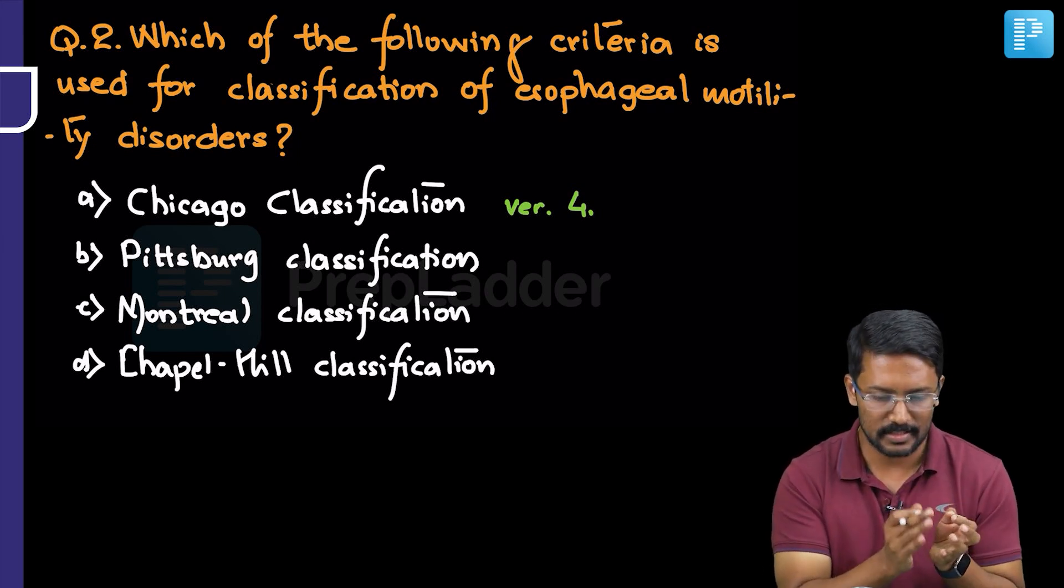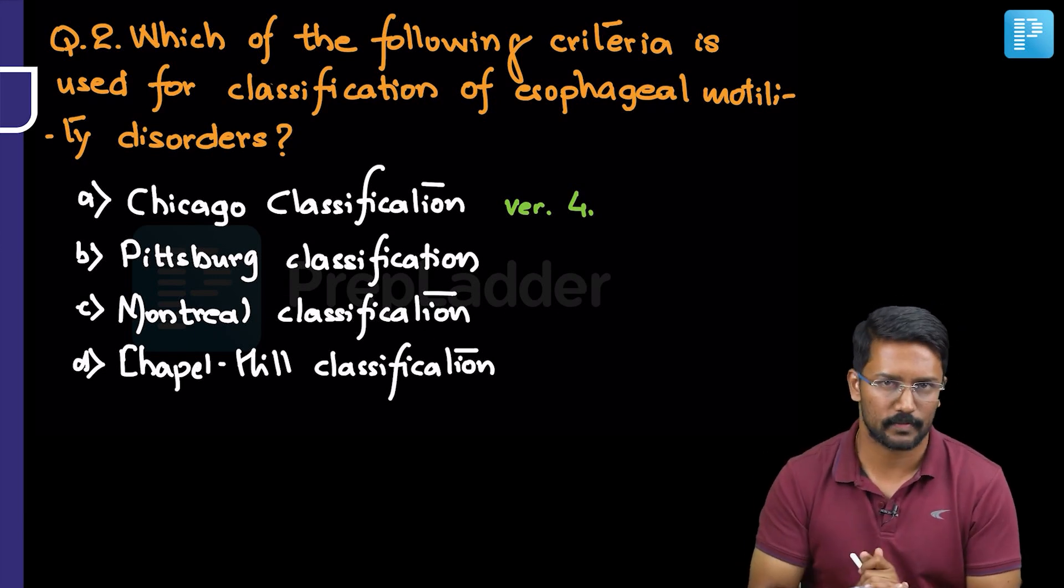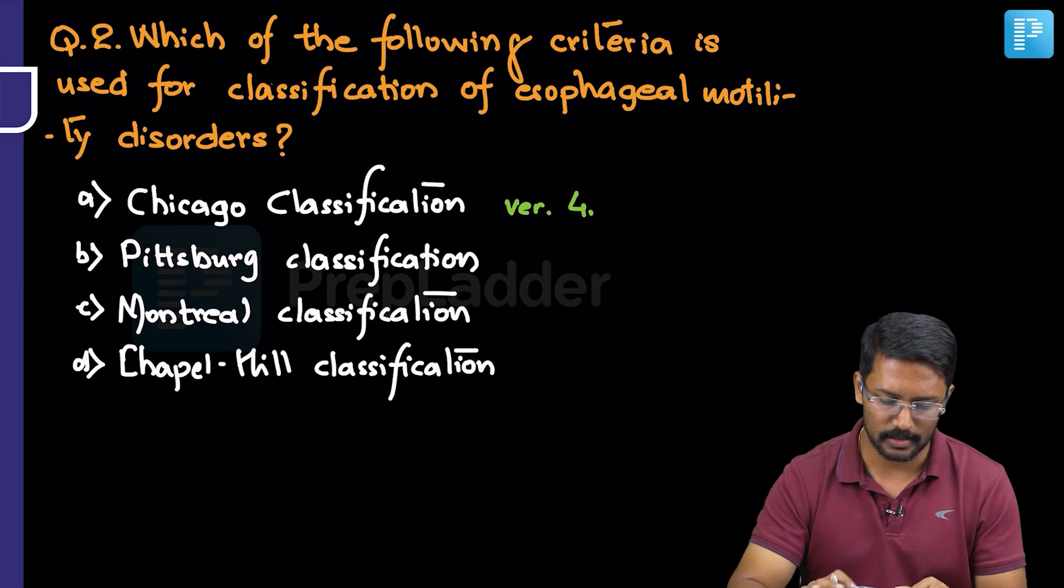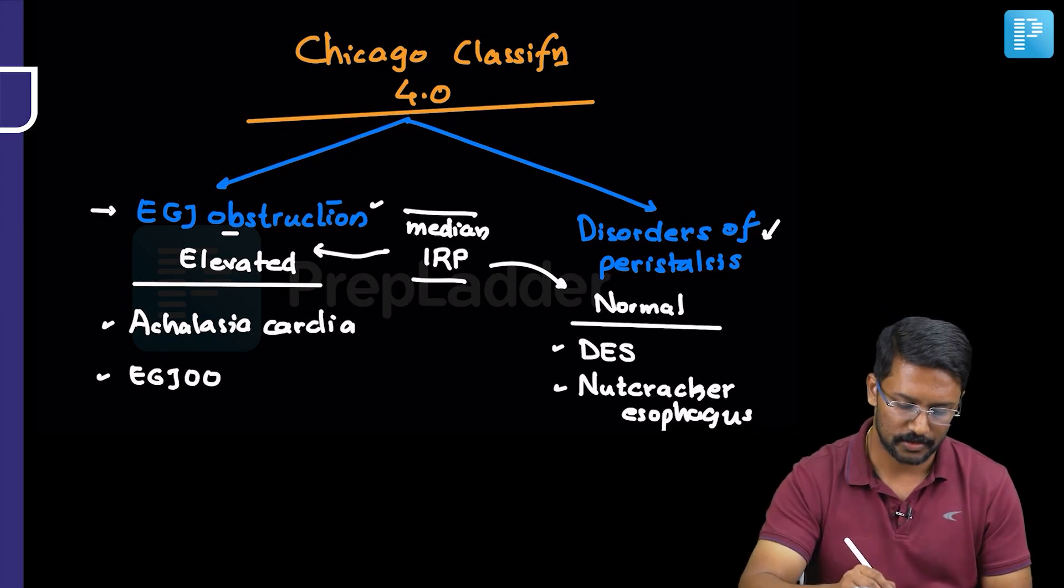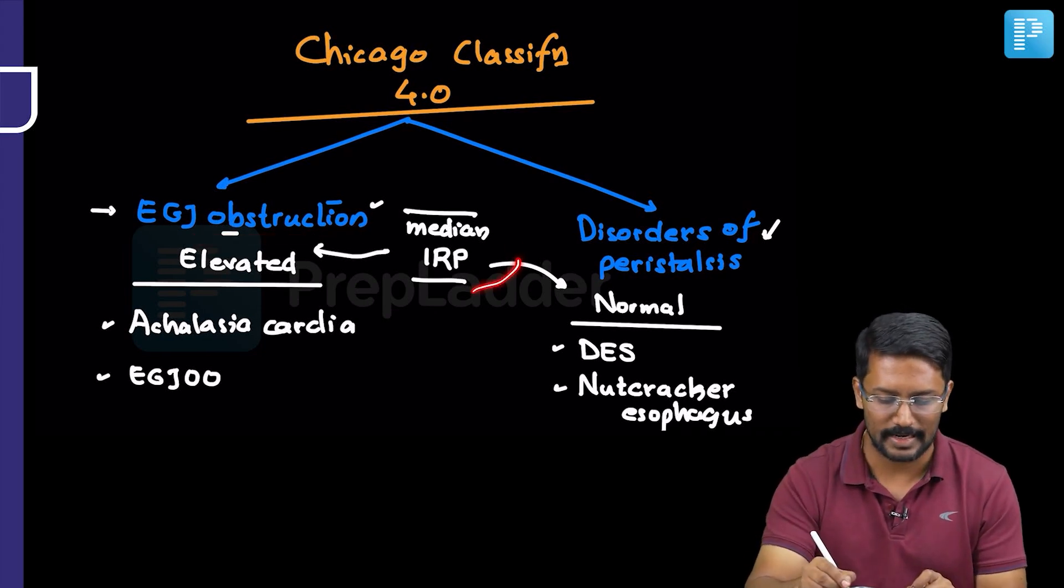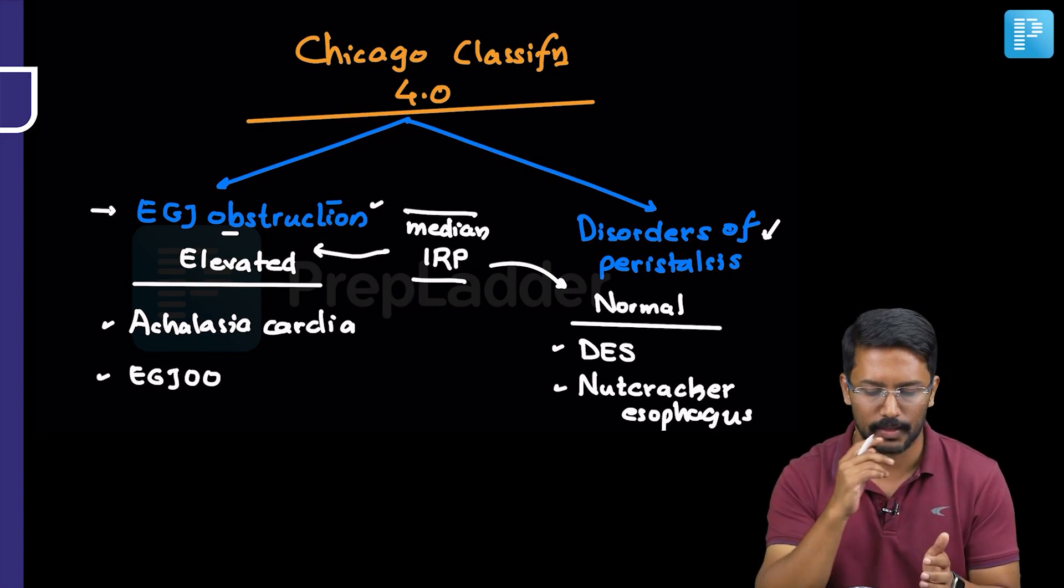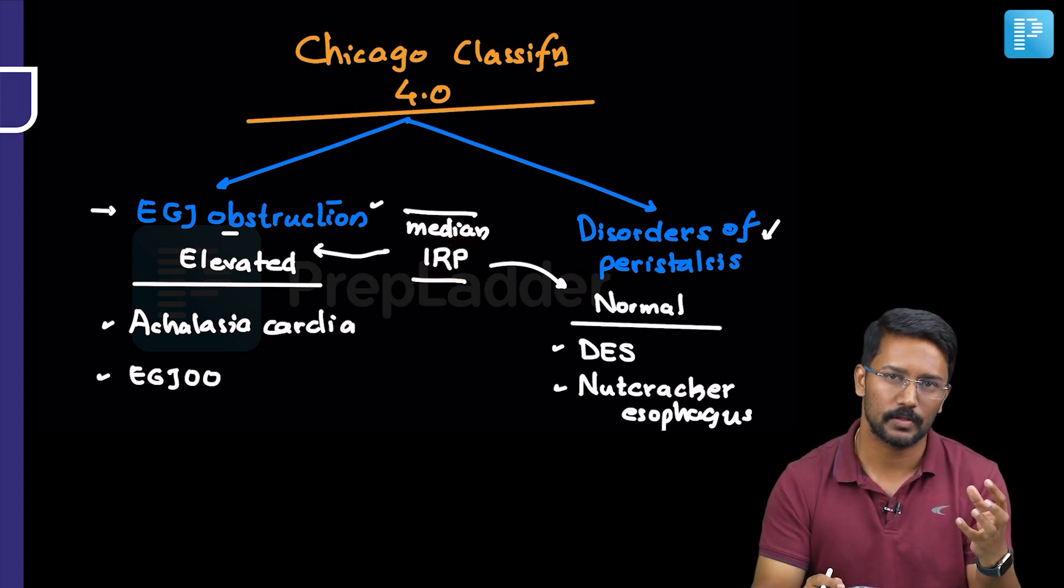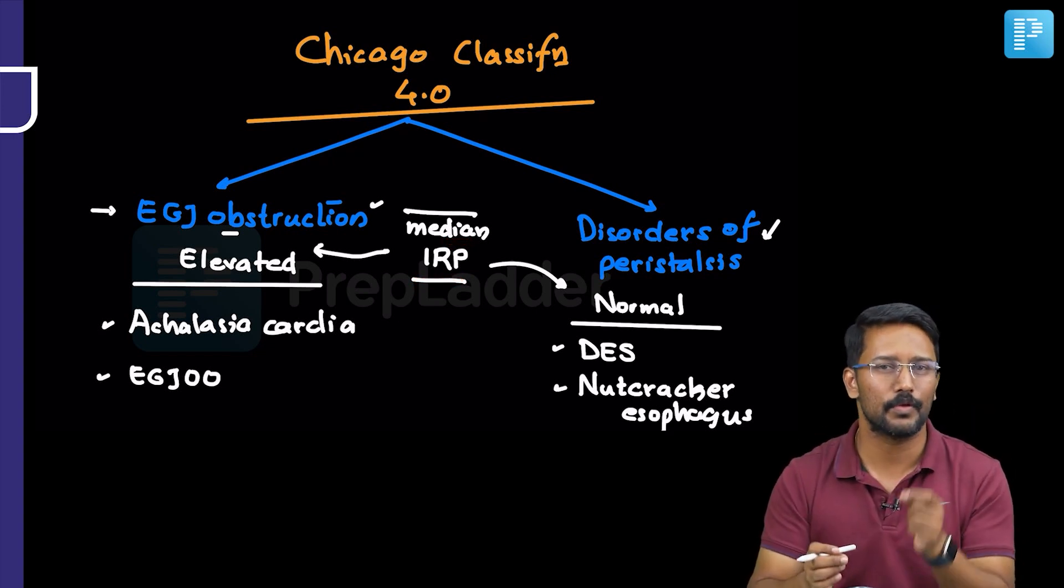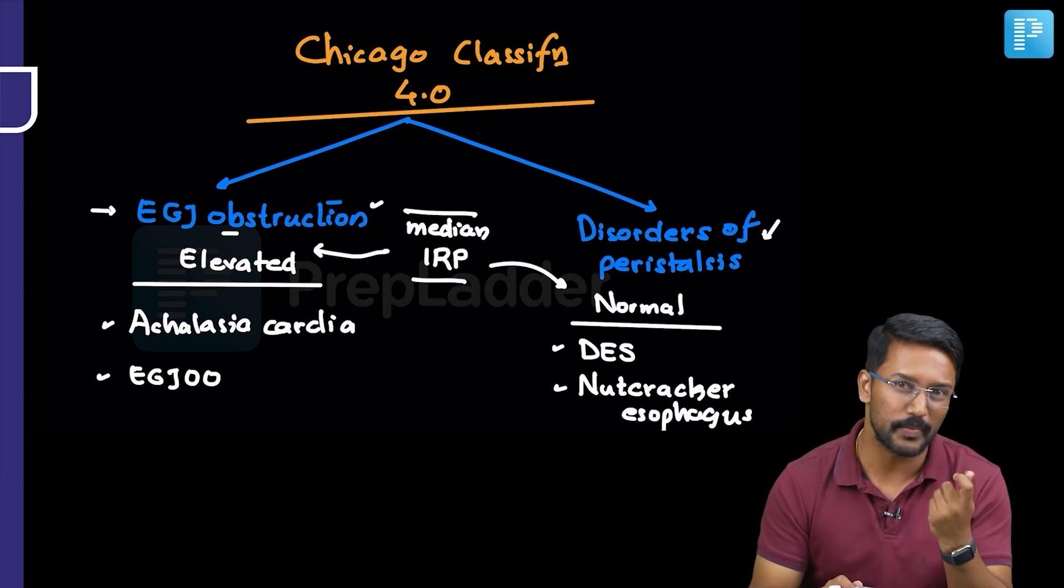Now I will just take a quick look at the Chicago classification before we move further with the next question. I have already told you in Chicago classification the disorders are broadly classified into two groups, the groups with esophagogastric junction obstruction where they have elevated median integrated relaxation pressure. Why are we calling it as median integrated relaxation pressure? Because we are taking 10 swallows and every swallow the computer will give you an integrated relaxation pressure and we are taking the median of it, not the mean, median of it.